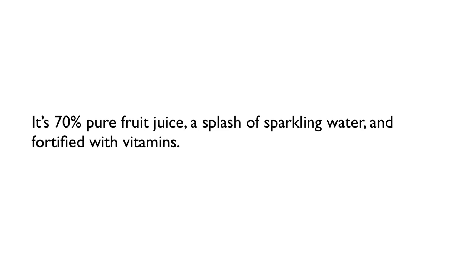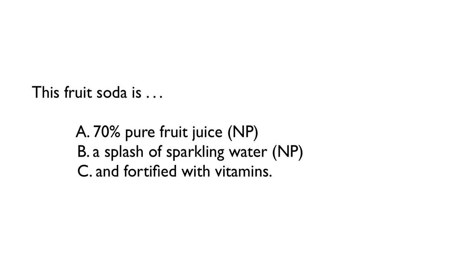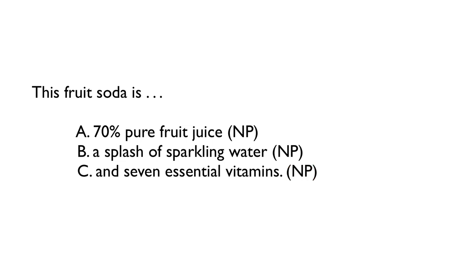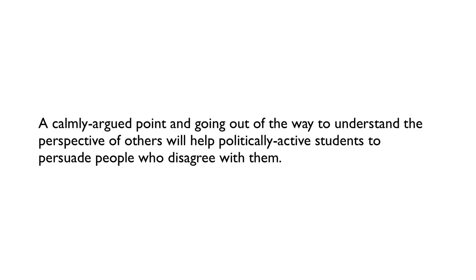Here's a sentence taken from a bottle of fruit juice: 'It's 70% pure fruit juice, a splash of sparkling water, and fortified with vitamins.' Can you detect the part that is not grammatically parallel? Part A — '70% fruit juice' — is a noun phrase (NP). Part B — 'a splash of sparkling water' — is also a noun phrase. But part C — 'fortified with vitamins' — is a participial phrase, a verb phrase. So it's not parallel. We could change C to 'seven essential vitamins,' giving us three noun phrases.